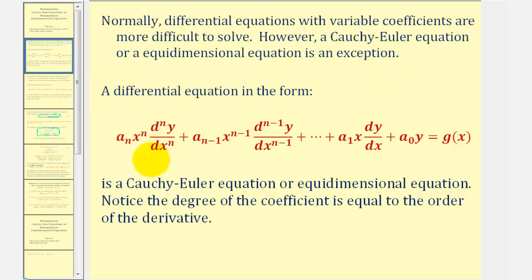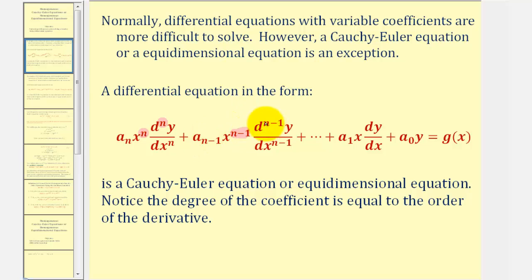A differential equation that fits this form is a Cauchy-Euler equation. The key thing to notice is that for each term, the degree of the coefficient is equal to the order of the derivative. Looking at the first term, the degree of the coefficient is n and we also have the nth derivative. For the second term, the degree of the coefficient is n minus one and we have the n minus one-th derivative. So for each term on the left side, the degree of the coefficient equals the order of the derivative.